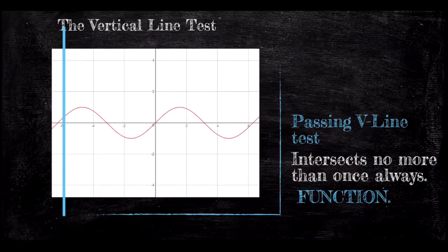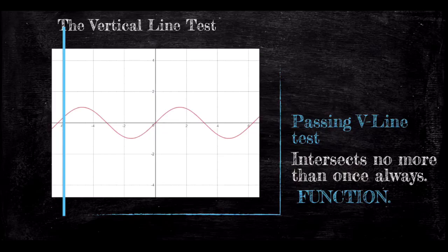The vertical line test tells us whether a relation, or graphed curve, is a function. We conduct this test by dragging a vertical line across the curve from left to right. That vertical line, when stopped at a value such as x equals negative 6, is checking how many outputs on our red graph are being matched with input negative 6. We can see only one intersection at the point negative 6, 0.4. This curve passes at x equals negative 6.